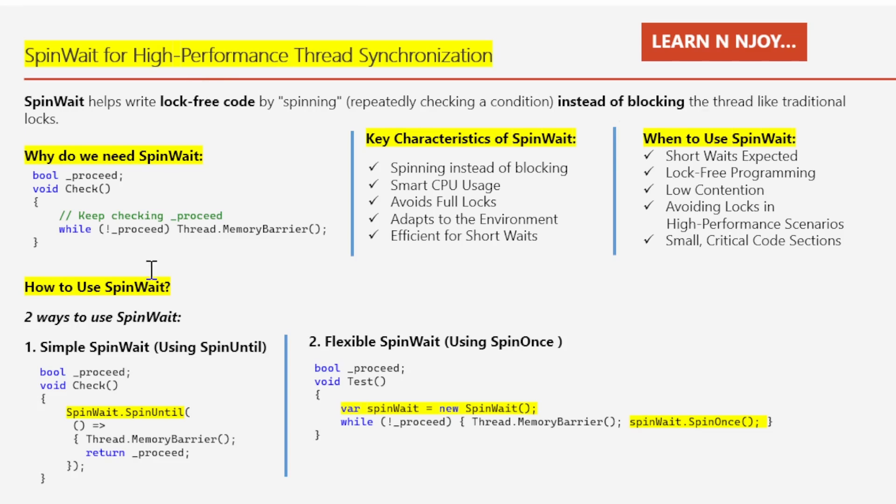When I said lock-free code, what does it mean? Normally when multiple threads need access to a shared resource like a file or a piece of data, we use a lock to prevent other threads from using it until the current thread is done. This blocks other threads from proceeding, which can slow down the program. Lock-free code avoids this by not using locks, allowing threads to work without blocking each other.